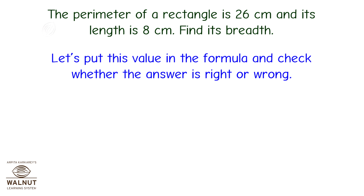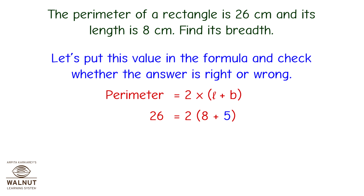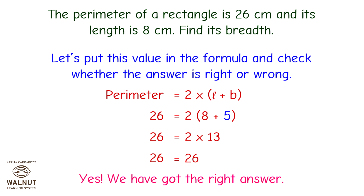Let's put this value in the formula and check whether the answer is right or wrong. Perimeter is equal to 2 multiplied by length plus breadth. So 26 is equal to 2 into brackets 8 plus 5, that is equal to 26 is equal to 2 multiplied by 13. So 26 is equal to 26. Yes, we have got the right answer.